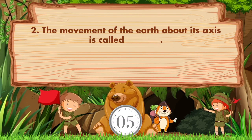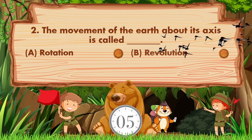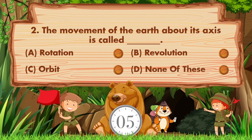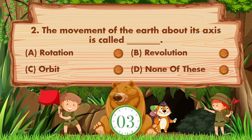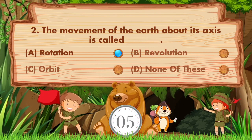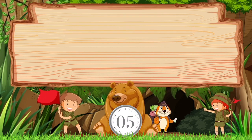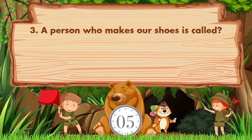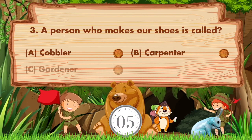The movement of the earth about its axis is called blank. Option A: rotation, B: revolution, C: orbit, D: none of these. Answer is option A, rotation.